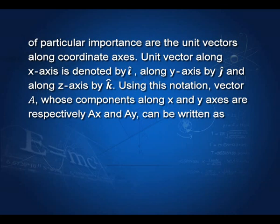Of particular importance are the unit vectors along the coordinate axes. The unit vector along the x axis is denoted by i-cap, along the y axis by j-cap, and along the z axis by k-cap. Using this notation, vector A whose components along x and y are A x and A y can be written as vector A equals A x times i-cap plus A y times j-cap. This is how we write vectors in terms of unit vectors.